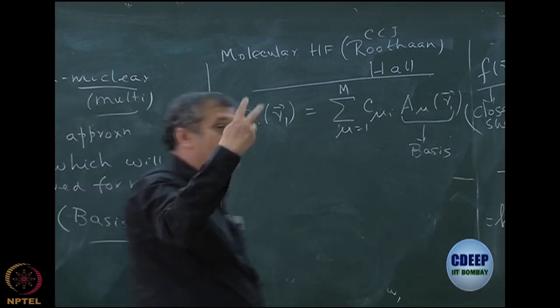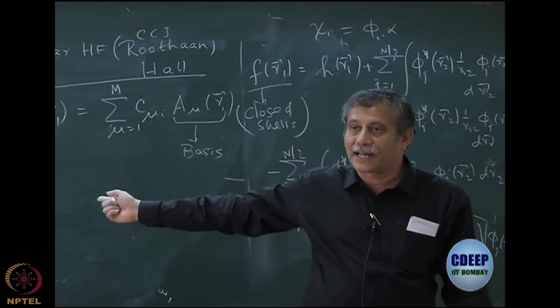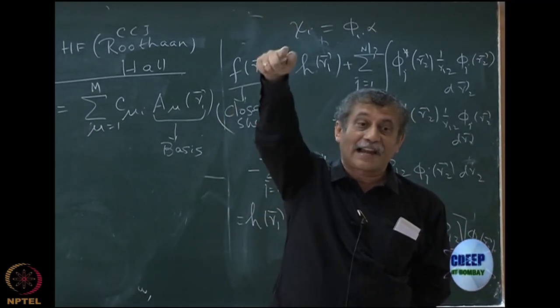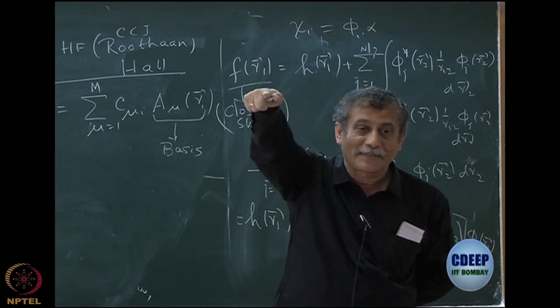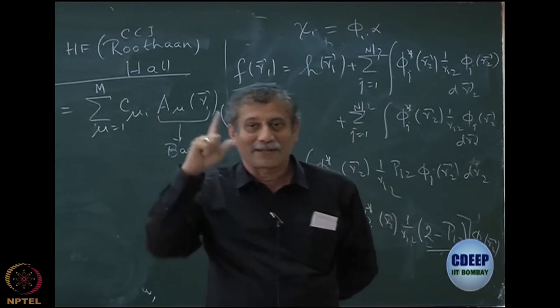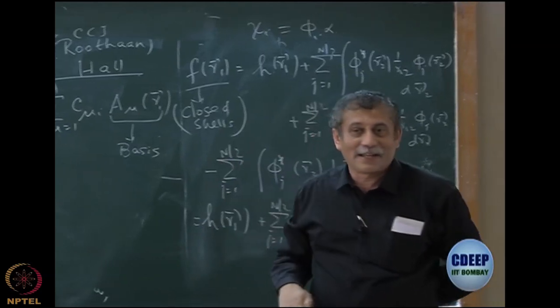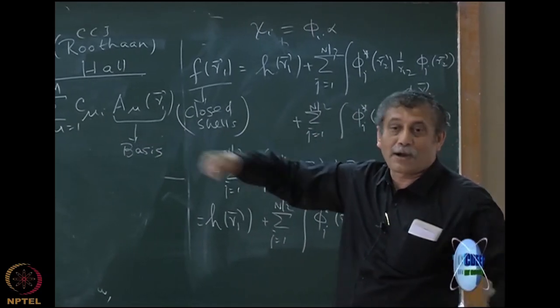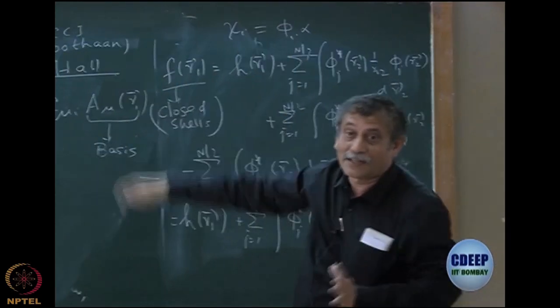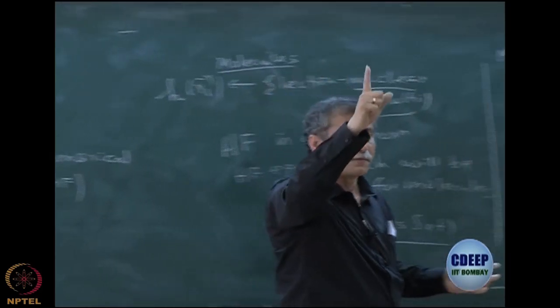These are my M dimensional basis for space orbitals. So of course I am going to get how many spin orbitals? 2M. My space orbitals are capital M and I am going to get 2M, and then if I want to do CI I will get exactly 2M choose N. My M was not space orbital spin orbitals. So M choose N is the right answer, but here I will get 2M choose N determinants.